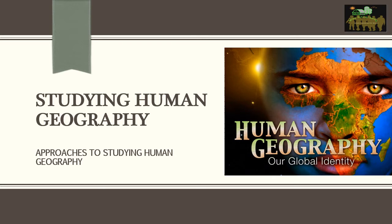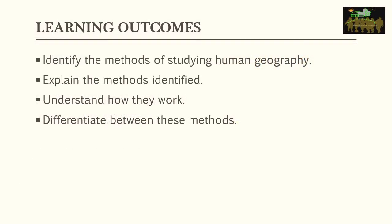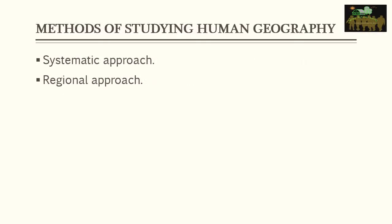Today we'll be looking at the approaches to studying human geography, going into detail concerning the approaches. At the end of this video we hope to be able to identify the methods of studying human geography, explain the methods identified, understand how they work, and differentiate between these methods. There are two main approaches: the systematic approach and the regional approach.